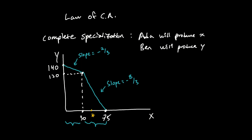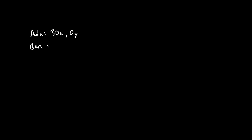Drawing their individual PPFs on the same graph — Ben's at 45 and 120, Ada's at 30 and 20 — we can see PPF sub a, PPF sub b, and their combined PPF. We'll assume they produce at the point of complete specialization: Ada has 30 units of good x and 0 y, and Ben has 0 units of good x and 120 units of good y. Now let's determine the terms of trade.